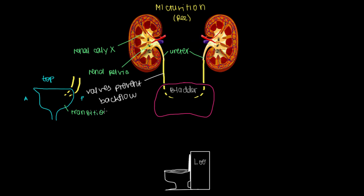The bladder is lined with something called transitional epithelium. You may have heard of squamous epithelium — flat epithelial cells — or columnar epithelium, which are taller cells. Transitional just means they're somewhere in between. This allows the bladder to expand as it fills with urine. Our transitional epithelium allows the bladder to hold about 300 to 500 milliliters of urine, which is about the volume of a tall bottle of water.